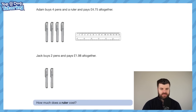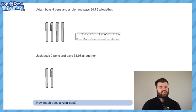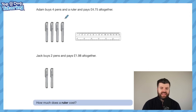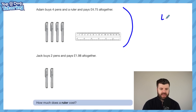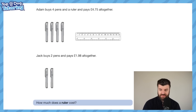There's one other question type I love because it's all about not rushing to use the first bit of information. Adam buys four pens and a ruler and pays £4.75 altogether. This question has two unknowns - we don't know how much the pen costs and we don't know how much the ruler costs. So we cannot work out anything from this top bit of information. Some children might be tempted to divide £4.75 by five, but that assumes the pen and ruler cost the same, which we don't know.